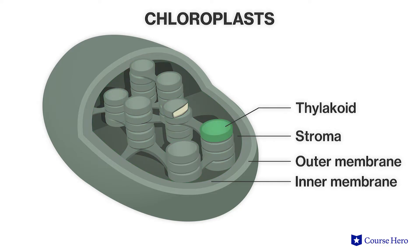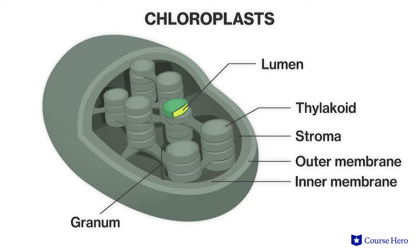A thylakoid is a membrane-bound sac inside the stroma that may be stacked into columns. A stack of thylakoid sacs where the light reaction of photosynthesis takes place is called a granum — grana for plural. The space within each thylakoid sac is called the lumen.